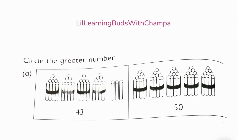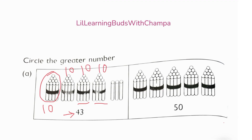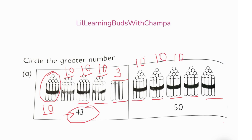Circle the greater number — so which one is bigger? Before that, let's count the sticks. If the number hadn't been given, how would we do it? We would count. So it's a pile of 10 sticks, 10 sticks, 10 sticks again — counted 10 sticks, 10 sticks — and these are 3. So 10 plus 10 plus 10 plus 10 plus 10 plus 10 plus 10 plus 3 makes 43.